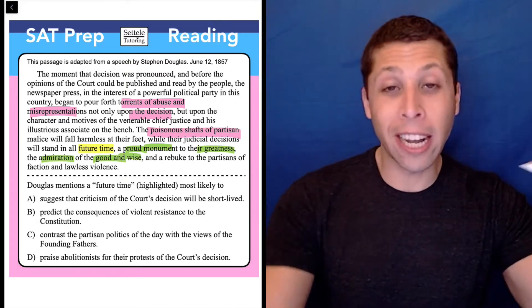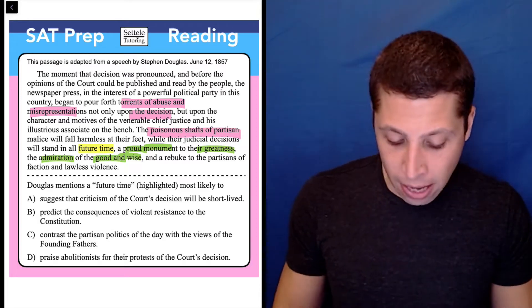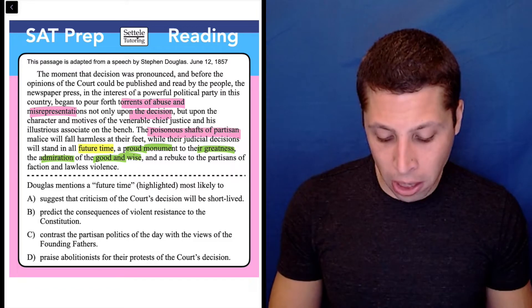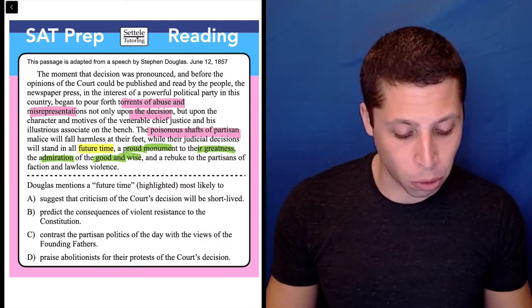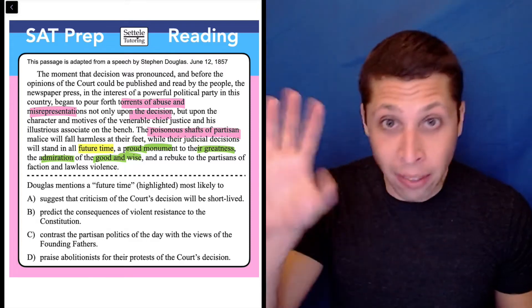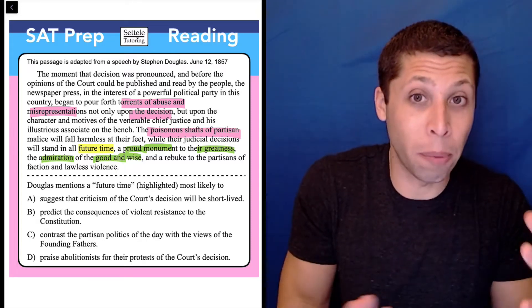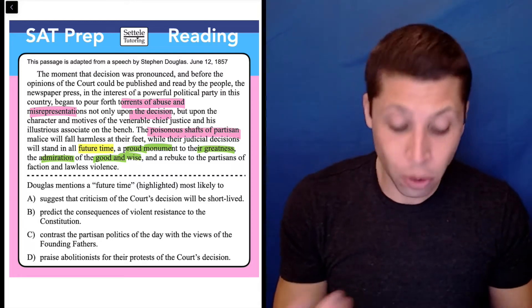So there's clearly a contrast between negative and positive. So let's use that to help us with the choices. So why does Douglass mention a future time? To suggest that criticism of the court's decision will be short-lived. Well yeah, the criticism, the negative stuff that I highlighted is going to go away because in future time, the court will be admired for its decision. So that seems to work.